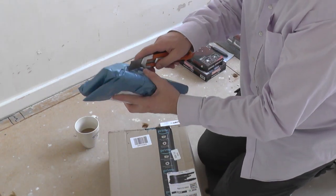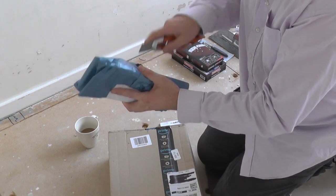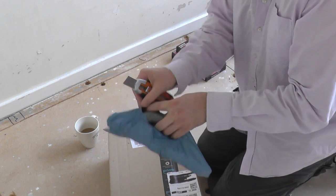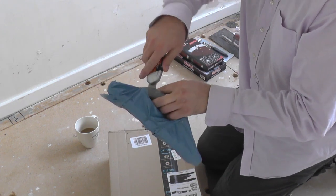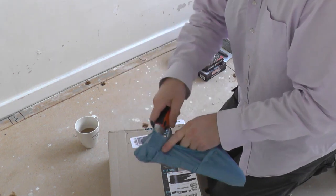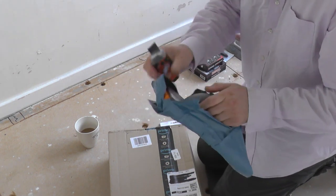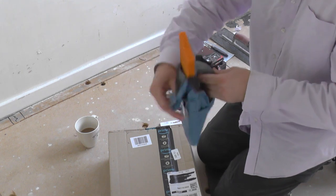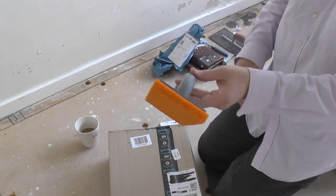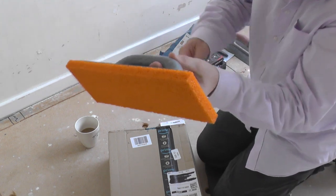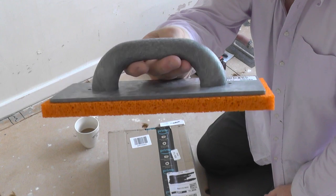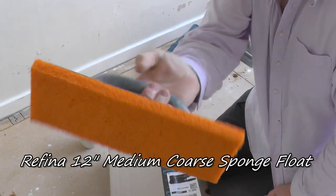Now number two, this is a purchase which I've been thinking about making for quite some time. There was no point making the purchase until now because this is going to be used in plastering and I haven't had any plastering to do before now. So anyway, this is a Ruffina 12 inch medium coarse sponge float.